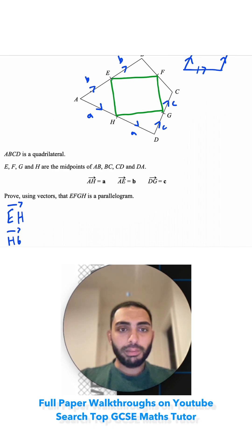E to H, we're going minus B because we're going backwards, so minus B plus A, which I'll rewrite as A minus B. H to G is A plus C.